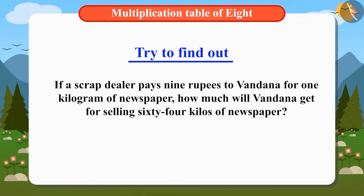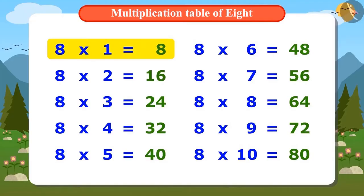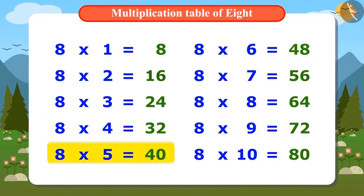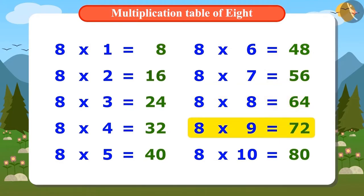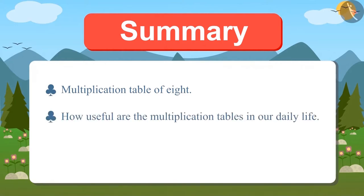Let's memorize the table of 8 for now. Vandana has even started singing: 8 ones are 8, 8 twos are 16, 8 threes are 24, 8 fours are 32, 8 fives are 40, 8 sixes are 48, 8 sevens are 56, 8 eights are 64, 8 nines are 72, 8 tens are 80. Today we have learned the multiplication table of 8 and how useful multiplication tables are in our daily life.